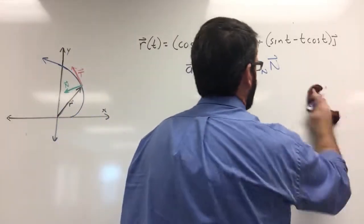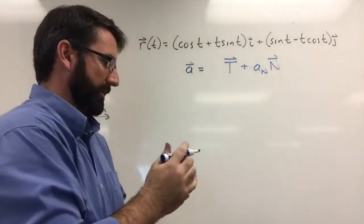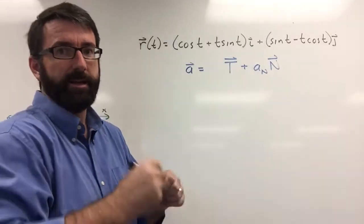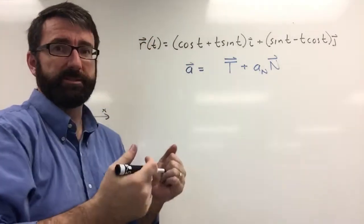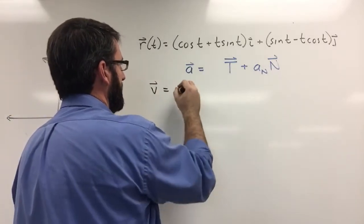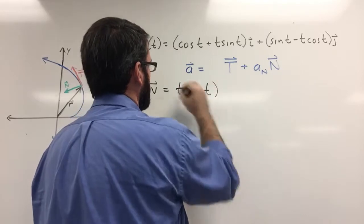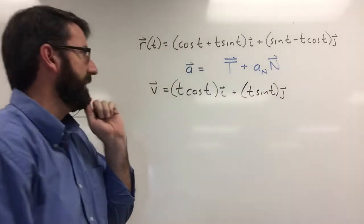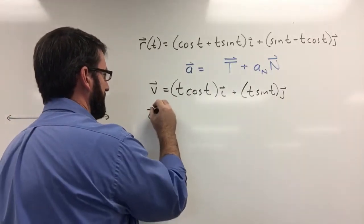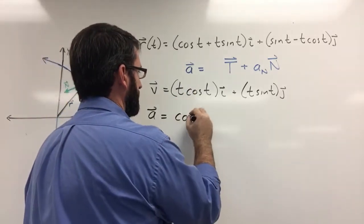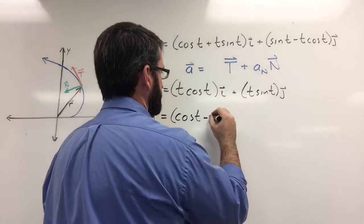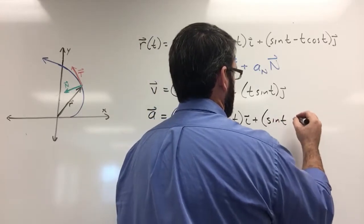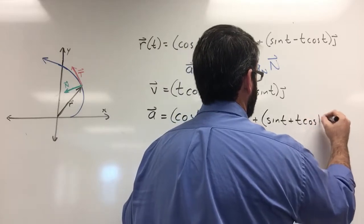Now let's go back and find our normal component of acceleration. To find it, we need the acceleration vector, which is the second derivative of our position vector. With velocity v equal to t cosine t times i plus t sine t times j, taking the derivative gives us the acceleration vector: cosine t minus t sine t times i, plus sine t plus t cosine t times j.